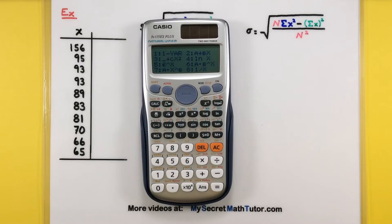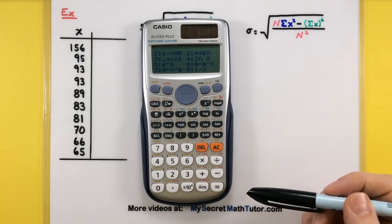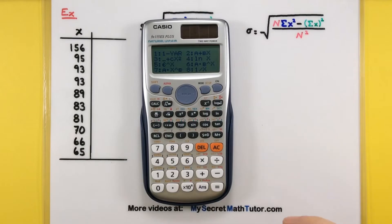So that switches it to the statistics options. We have lots of different things in here for different distributions. We just want to do a one variable statistic, so I'll select number 1.